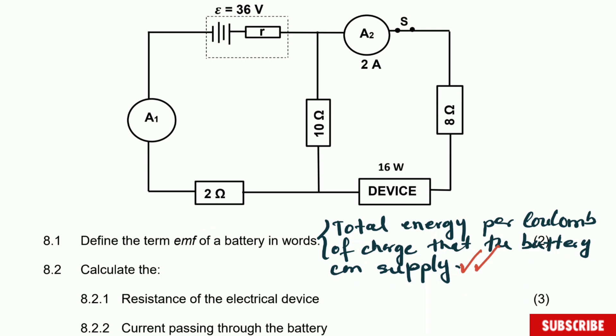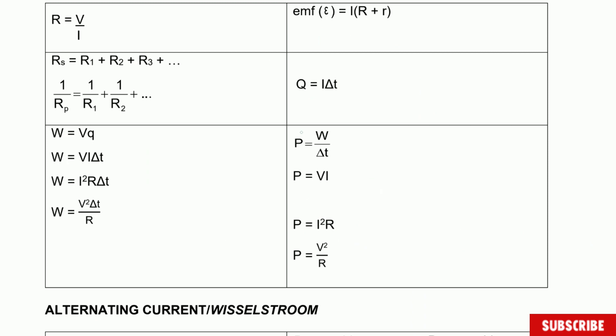Question 8.2: calculate the resistance of the electrical device. The current will flow in one direction and then split. The current through the 16 watt device is 2 amperes, and we can use the formula for power. The one that is going to help us is P = I²R, because we have the current and the power and we're looking for resistance.